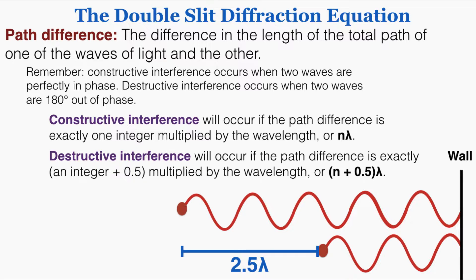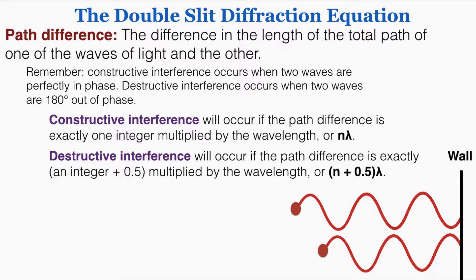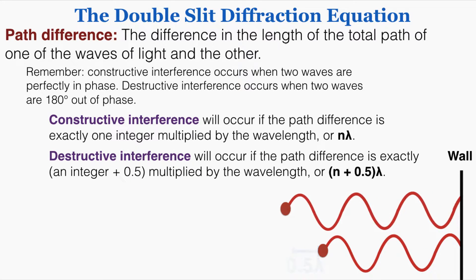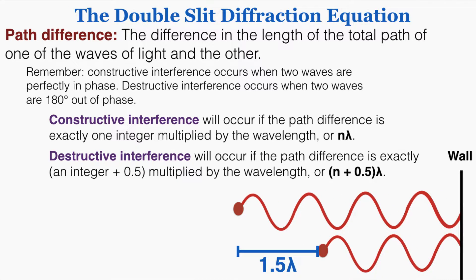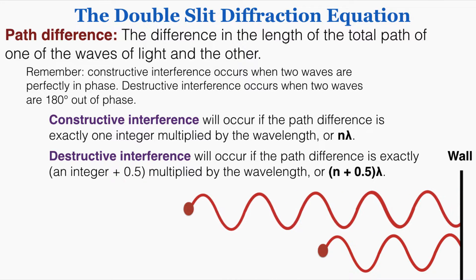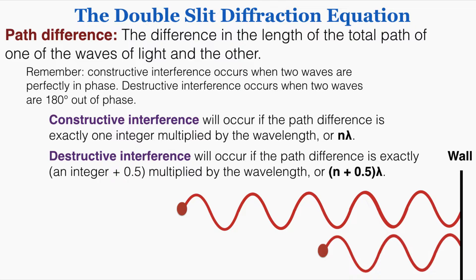The pattern is that destructive interference will occur for every integer plus 0.5 multiplied by the wavelength. So using integer 0: 0 plus 0.5 is 0.5 lambda. Next integer 1: 1 plus 0.5 is 1.5 lambda. Then 2: giving 2.5 times lambda. So if the waves are otherwise perfectly the same, the path difference can tell you whether constructive or destructive interference will occur.